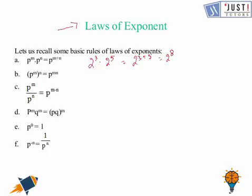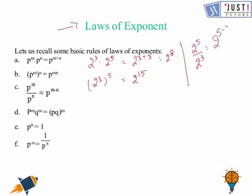The next law is p to the power m, to the power n, equals p to the power m times n. For example, 2 to the power 3 to the power 5 would be 2 to the power 15. The next is p to the power m divided by p to the power n equals p to the power m minus n. So 2 to the power 5 divided by 2 to the power 3 is equal to 2 to the power 2.